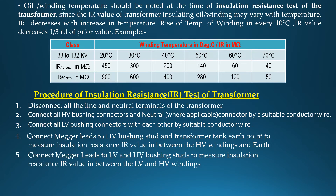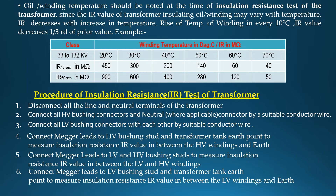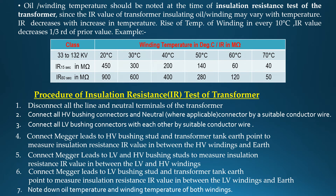Connect megger leads to LV and HV bushing studs to measure insulation resistance IR between the LV winding and HV winding. Connect megger leads to LV bushing stud and transformer tank earth point to measure insulation resistance IR value between the LV winding and earth. Note down the oil temperature and winding temperature of both windings.